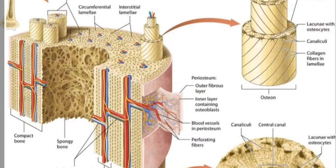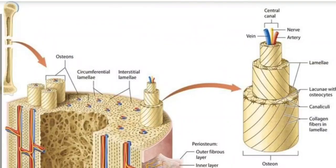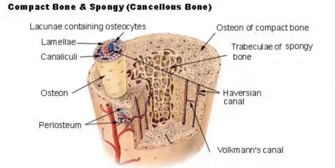Microscopic Structure of a Bone: The basic microscopic unit of bone is an osteon. These are roughly cylindrical structures that can measure several millimeters long and around 0.2 mm in diameter. Each osteon consists of lamellae of compact bone tissue that surround a central canal, i.e. the Haversian canal. Bones are made up of two tissue types: compact bone, also known as cortical bone, which is a hard outer layer that is strong and dense, and cancellous bone, also known as trabecular bone.